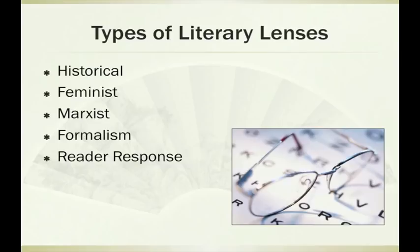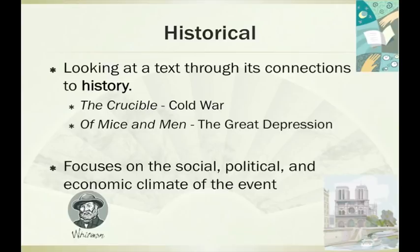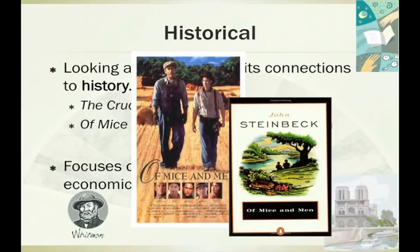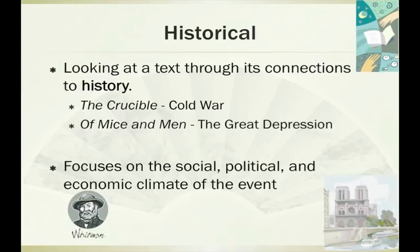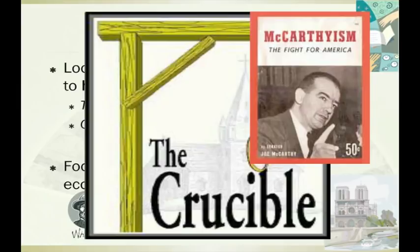Let's look at each one in a little more depth. The historical lens is looking at a text through its connections to history — on a couple levels. For example, Of Mice and Men was written in the Depression about the Depression, so historical ties jump out, like characters having to find work. We also have The Crucible, which is interesting because it was written during the Cold War in the 1950s but is actually about the Salem Witch Trials. So we have two different historical time periods to connect. On the surface it's about the Salem Witch Trials of the 1690s, but when we get down to it, this is really more about McCarthyism — the witch hunts of the 1950s during the Cold War.